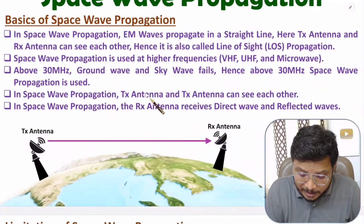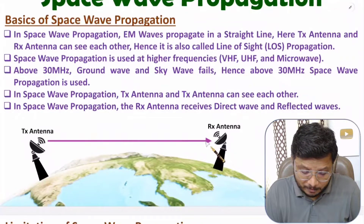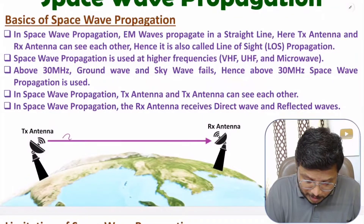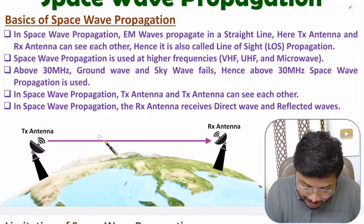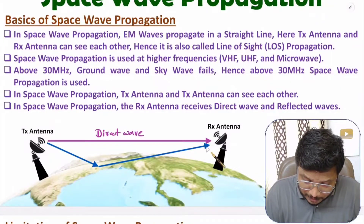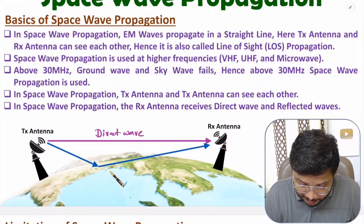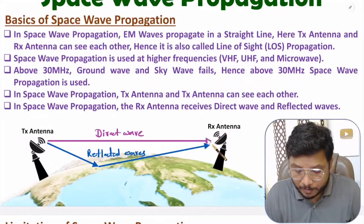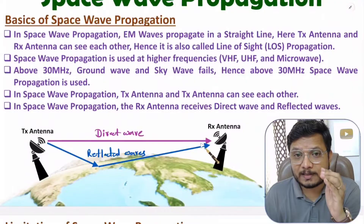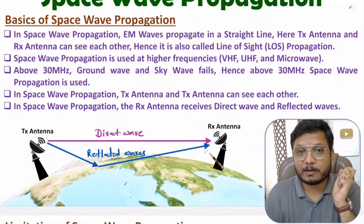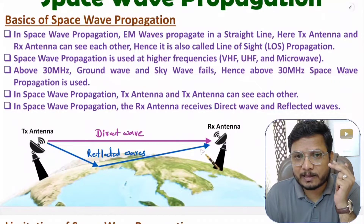In space wave propagation, the transmitting and receiving antenna can see each other, enabling line of sight communication. There are two types of waves: direct wave and reflected wave. The direct wave travels in a straight line, while the reflected wave has a longer propagation path, creating a phase difference. This phase difference in the reflected wave causes noise issues at the receiver side.